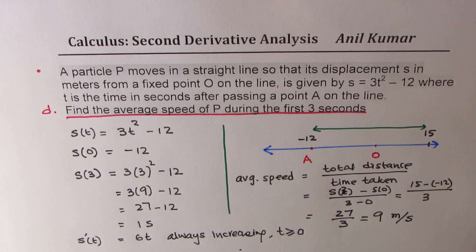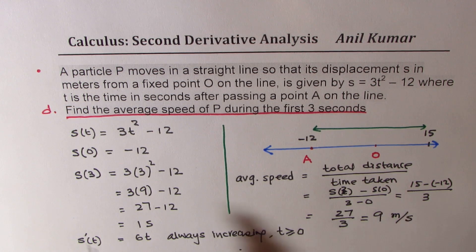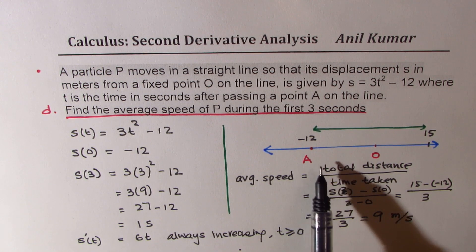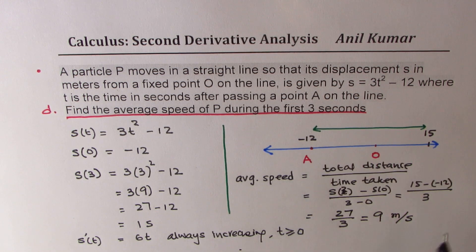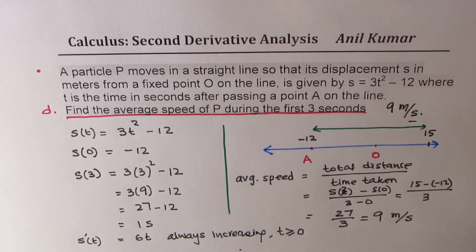So basically what you need to do is, since the particle is moving in one direction, we'll have another example where there'll be a turning point. So things become slightly tricky in that case. Now, here it is straightforward. Since the particle is always moving in one direction, we could straight away find the distance as S of 3 minus S of 0. So at 3, it is 27 minus 12. And at 0, it is minus 12. So the difference between these two is 27. And dividing by 3, we get 9 meters per second. So the average speed here is 9 meters per second. So I hope the steps taken here are clear. Feel free to write your comments and share your views. And if you really like and subscribe to my videos, then I'll be very grateful. Thanks for watching and all the best.